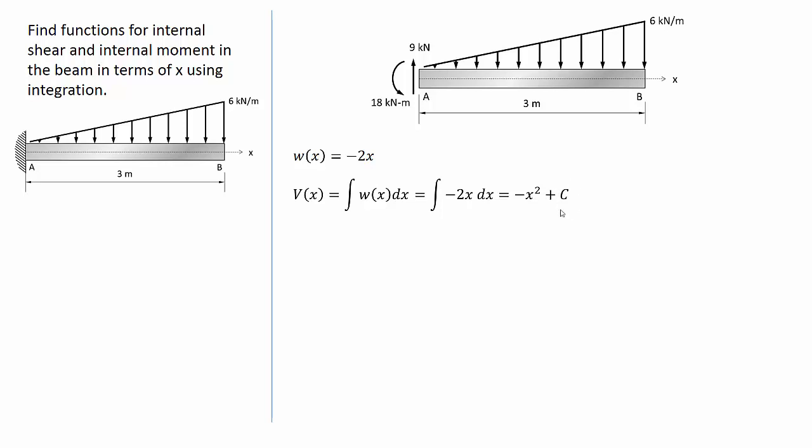Now, I need to find out what this constant is. To find this constant, I'm going to use the boundary conditions for the shear diagram. Here is what the shear diagram roughly looks like. I know that at the support, when x equals 0, my shear is going to be a positive 9 kN, because that reaction bumps me up to 9.